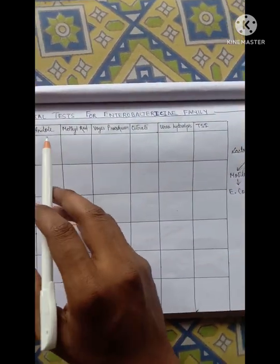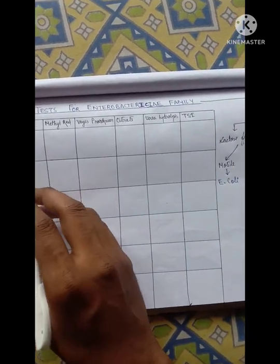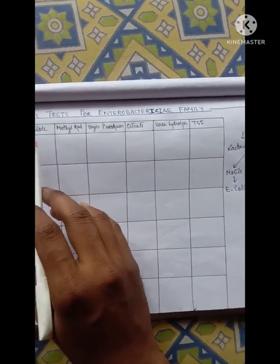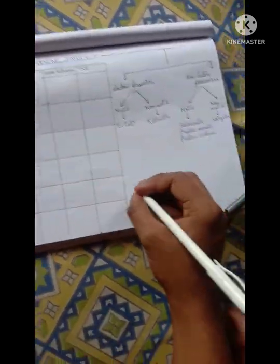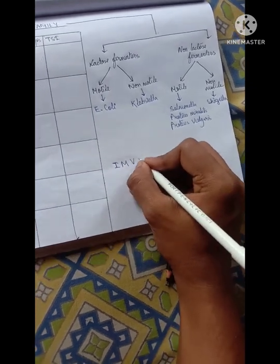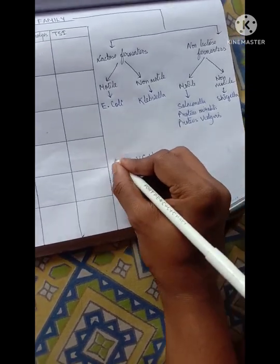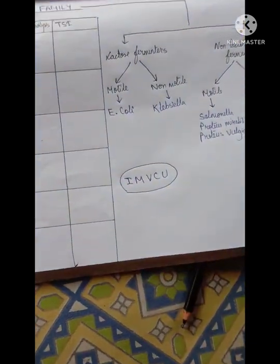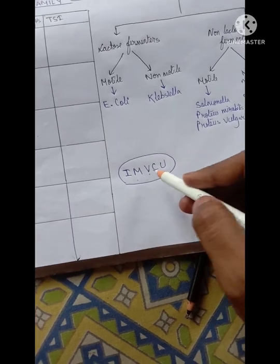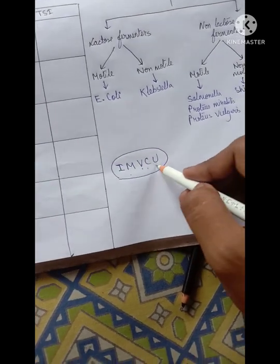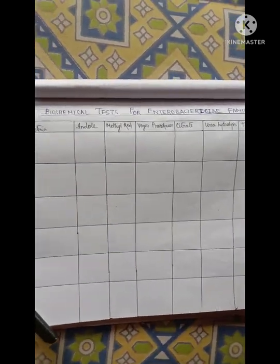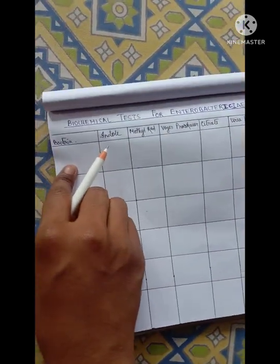The important thing to remember — the trick — is that you have to remember this order. For this order, you can remember the mnemonic IMVICU. I for Indole, M for Methyl Red, V for Voges-Proskauer, C for Citrate, and U for Urease. If you remember in this order, then it will be very easy. So, now let's get started.